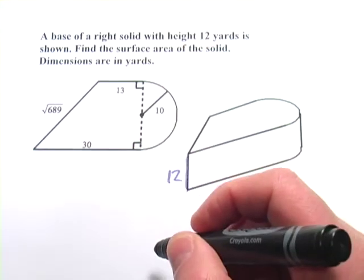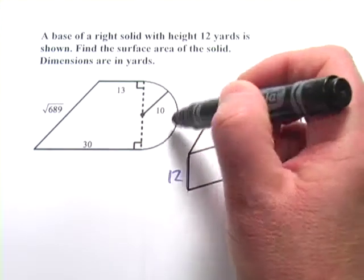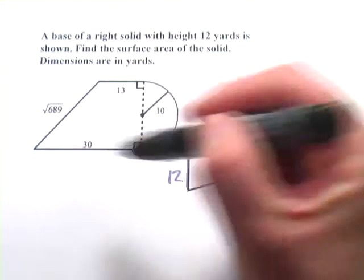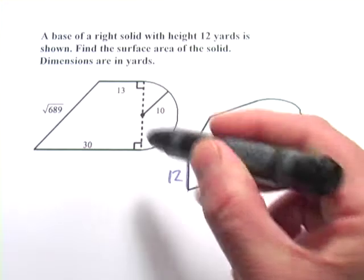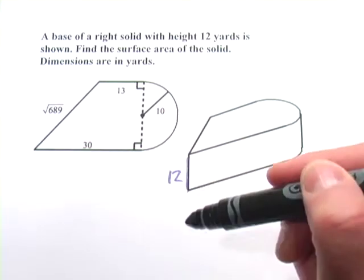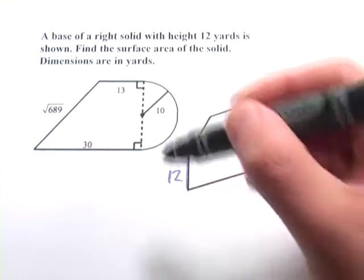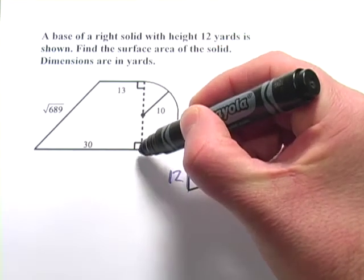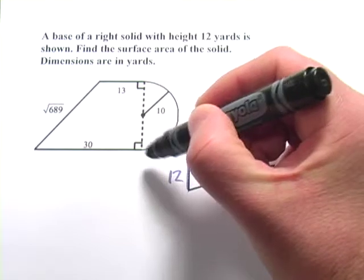So I think the way I would organize this first is to figure out the surface area of this face and multiply that by two to get the top and the bottom, and then we'll work on the strips. So let's look at this thing. We've got a circular end, we've got a triangular end, and in the middle, we've got basically a rectangle shape.